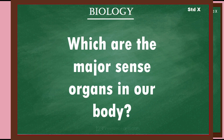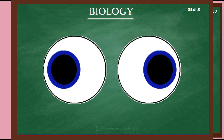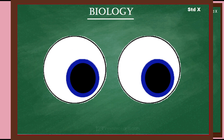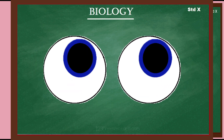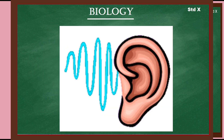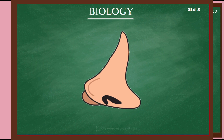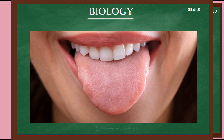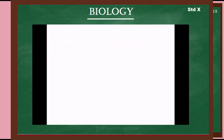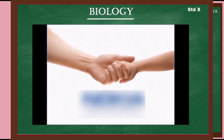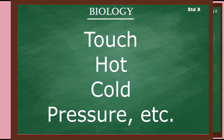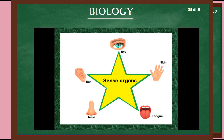Which are the major sense organs in our body? The eyes, which help us in vision to see mesmerizing things around us. Second, the ears, which help us to hear various things going on around us. Third, the nose, which helps to detect pleasant and unpleasant smells. Next is the tongue, which helps to detect a variety of tastes. And finally the skin, which is the largest sense organ and helps to identify various sensations like touch, pressure, and cold.